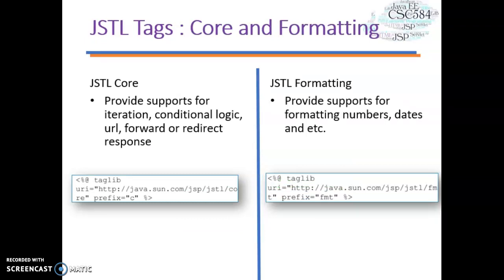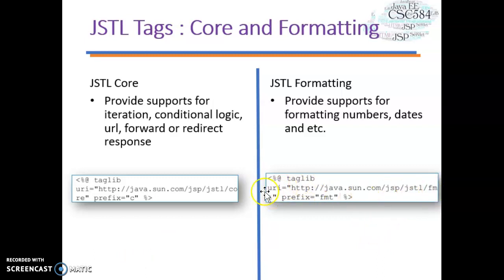Let's learn about the core library. Core provides support for iteration, conditional logic, URL forwarding, and redirect responses. JSTL formatting provides support for formatting numbers and dates. In the taglib syntax for core, you start with alias, taglib, and the URI — you need the correct URI with CORE at the end and prefix C, so in JSP code you use C as the start tag. For formatting, you use FMT at the end of the URI and prefix FMT in JSP code.